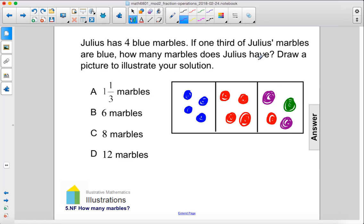So we can see how many marbles does he have? One, two, three, four, five, six, seven, eight, nine, ten, eleven, twelve. D, twelve marbles.